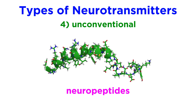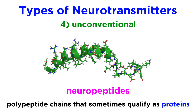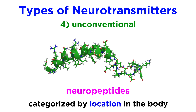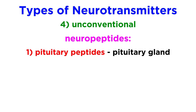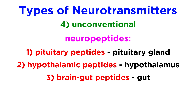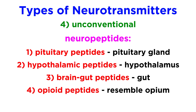There is also one class of very large neurotransmitters, and that's the neuropeptides. These are polypeptide chains, some of which are large enough to qualify as a protein. Each has a different function, which will depend on the amino acid sequence it possesses, and they are categorized primarily according to their location in the body. There are pituitary peptides in the pituitary gland, hypothalamic peptides in the hypothalamus, brain-gut peptides in the gut, as well as opioid peptides, which resemble opium, and then all the other miscellaneous ones are grouped into a fifth category.